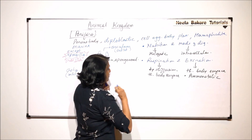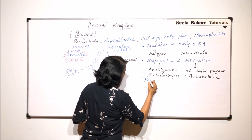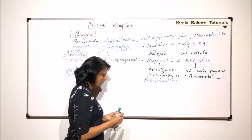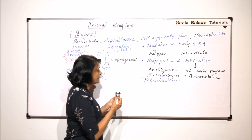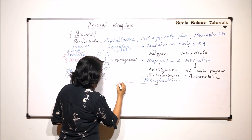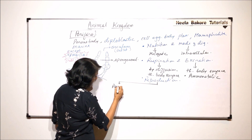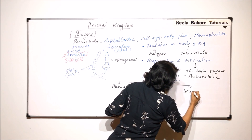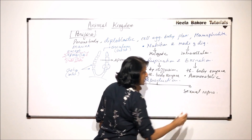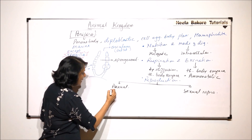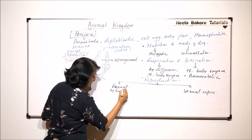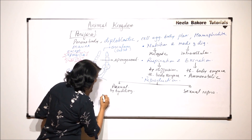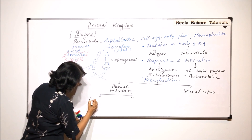Now let us talk about another process — that is reproduction. In case of sponges, both types of reproduction are seen: asexual and sexual. Asexual reproduction is by budding, and budding can be exogenous or endogenous.